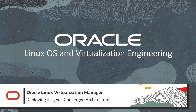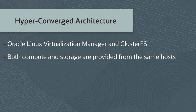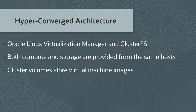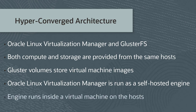In this video, I'll show you how to deploy a hyper-converged architecture. Oracle Linux Virtualization Manager has been integrated with Gluster 6, an open source distributed file system, to provide a hyper-converged solution where both compute and storage are provided from the same host. Gluster volumes, residing on the host, are used as storage domains in the manager to store the virtual machine images. Oracle Linux Virtualization Manager is run as a self-hosted engine within a virtual machine on these hosts.